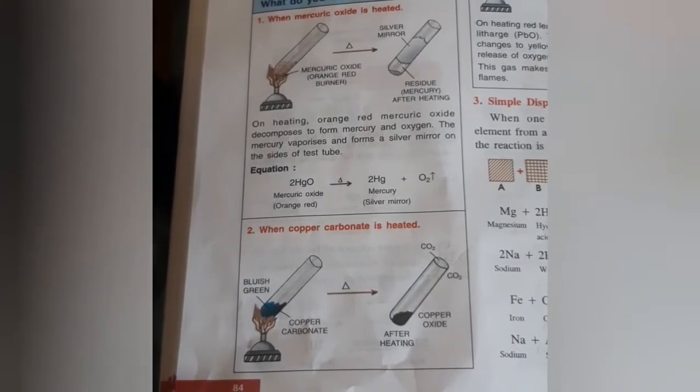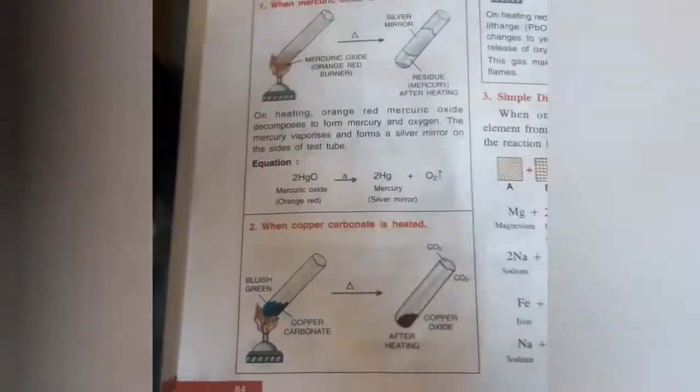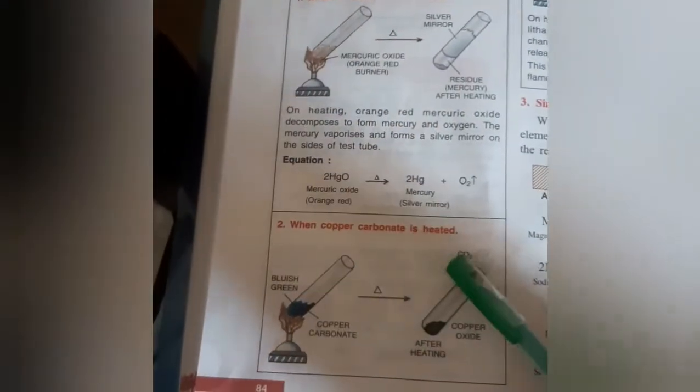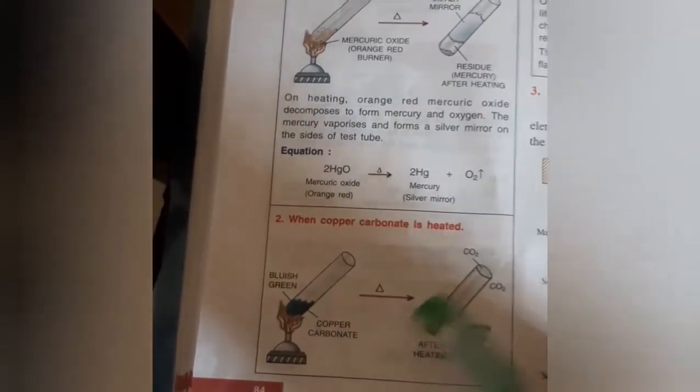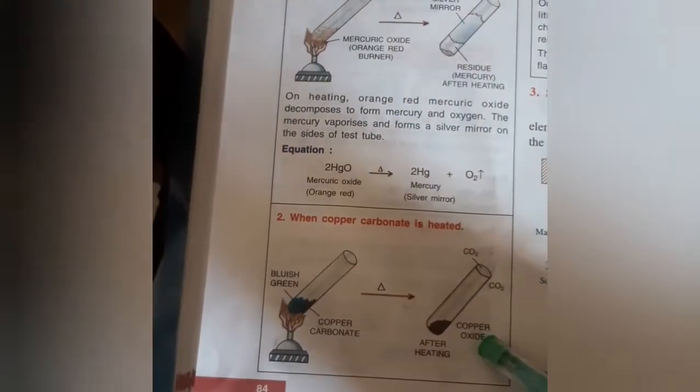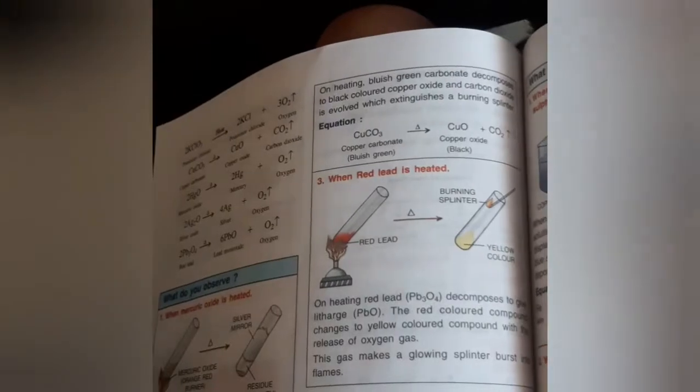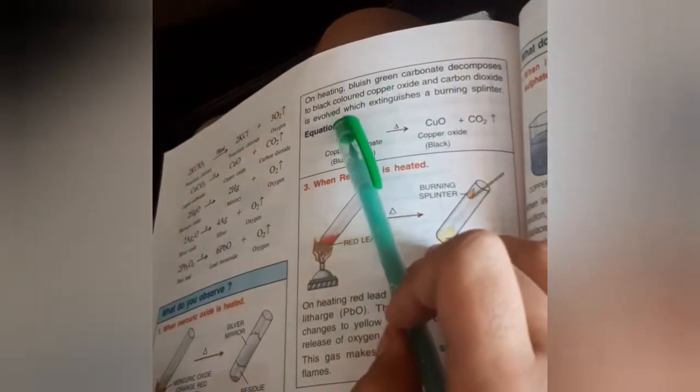Next topic: when copper carbonate is heated. You know that this is bluish green copper carbonate. On heating, bluish green copper carbonate decomposes to black colored copper oxide.